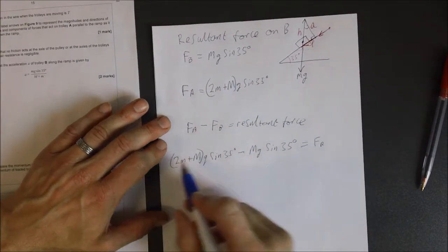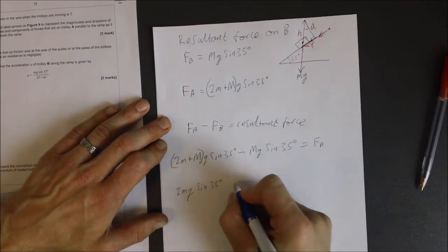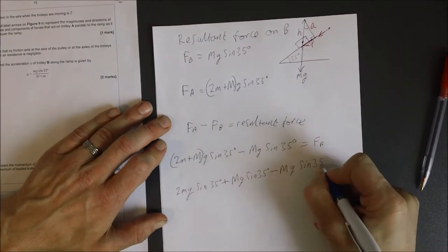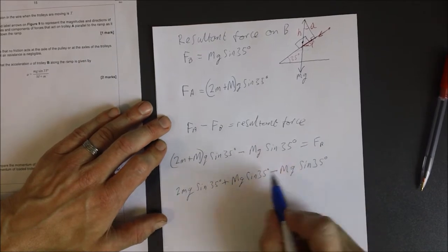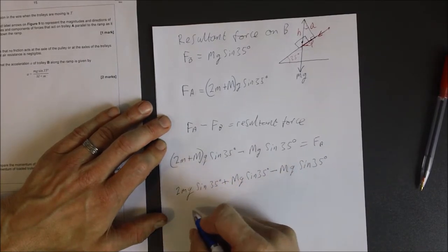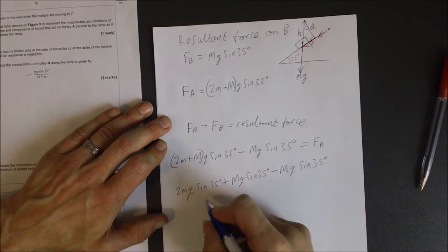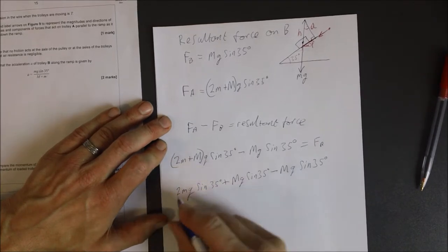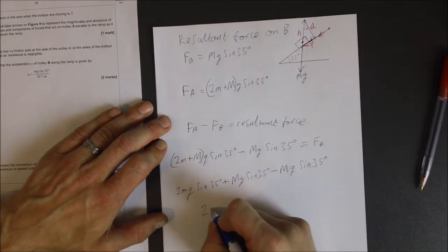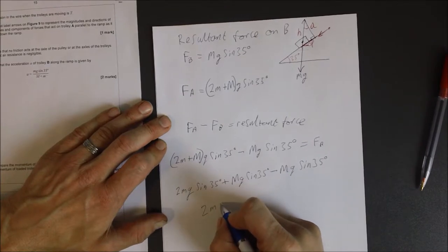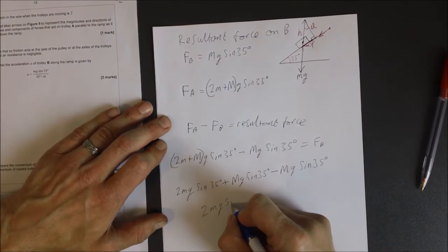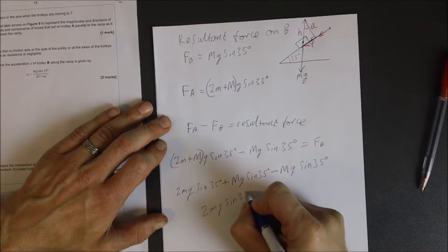Now I want to expand out this bracket. Those two we're going to minus out. So we're going to end up with the resultant force actually just being because of the two blocks. That's 2M, G, sine 35 degrees.